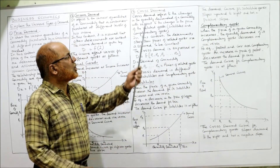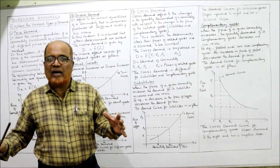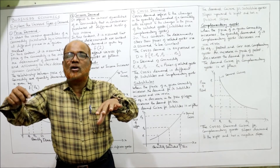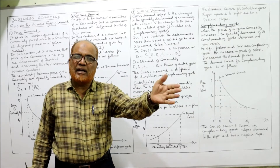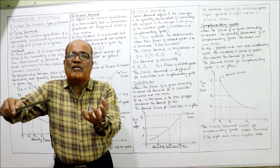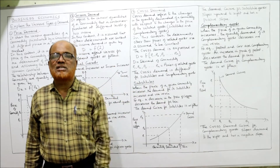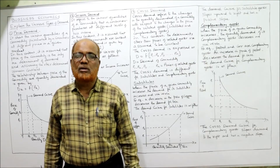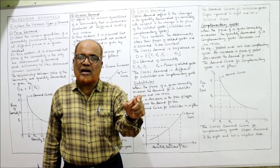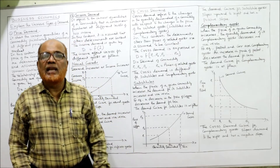The third type is cross demand. Cross demand applies to related goods, where a change in the price of one commodity leads to a change in demand for another commodity. Cross demand explains the proportionate change in demand of commodity A due to a proportionate change in the price of commodity B, when A and B are related to each other.